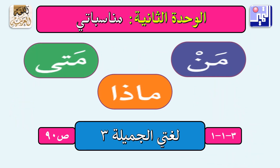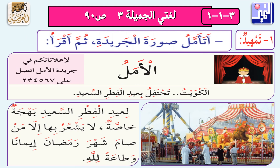درسنا اليوم يا أحباب في لغتنا الجميلة، صفحة تسعين من كتاب المدرسة: أدوات الاستفهام. أتأمل صورة الجريدة، ثم أقرأ: لإعلاناتكم في جريدة الأمل تتصل على 2-3-4-5-6-7. الكويت تحتفل بعيد الفطر السعيد. لعيد الفطر السعيد بهجة خاصة لا يشعر بها إلا من صام شهر رمضان إيمانًا وطاعةً لله.